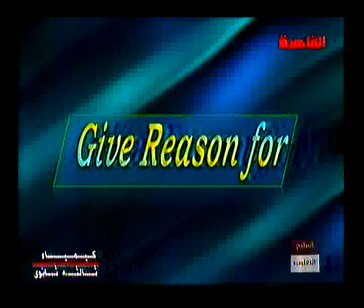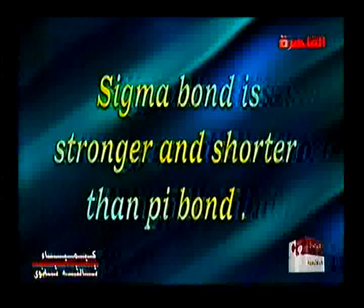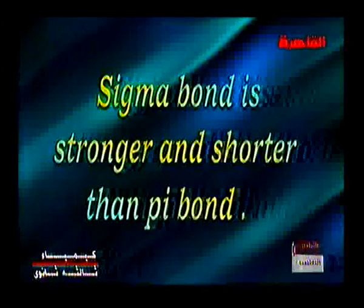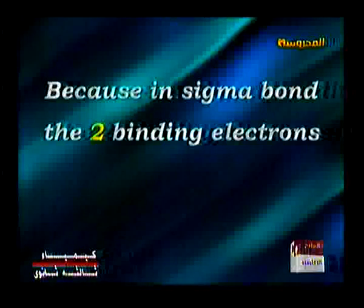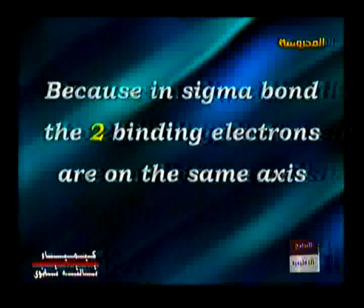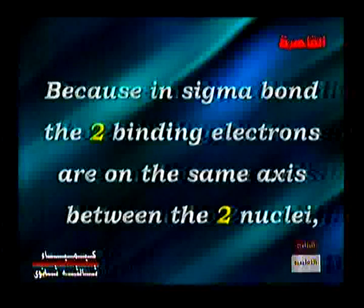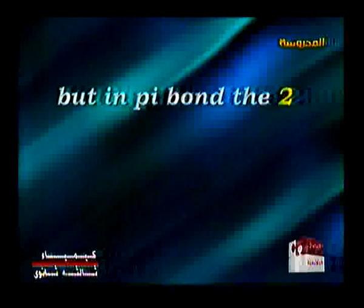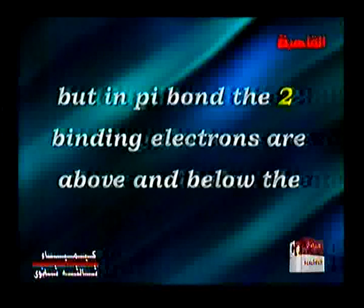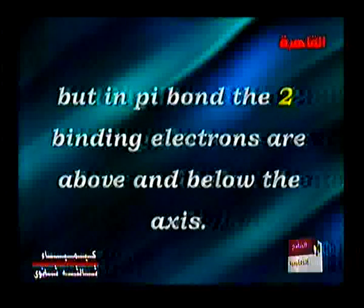Give reason: the sigma bond is stronger and shorter than the pi bond. Because in the sigma bond, the two binding electrons are on the same axis between the two nuclei. But in the pi bond, the two binding electrons are above and below the axis.